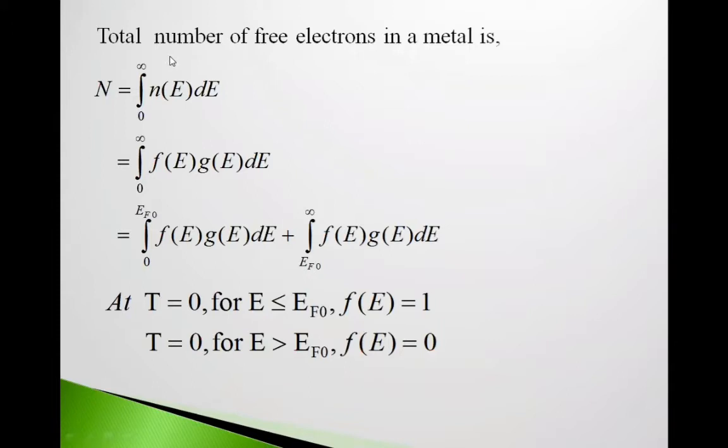So students, the total number of free electrons in a metal is given by N = ∫₀^∞ n(E)dE. Here n(E)dE is the distribution of energy among the particles in the range E to E plus dE.